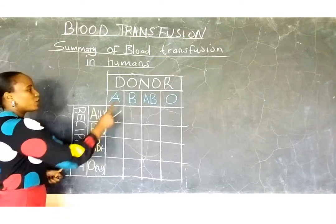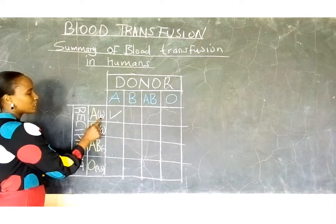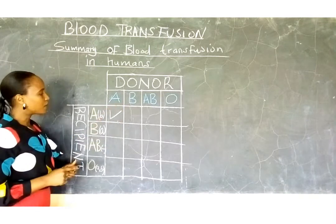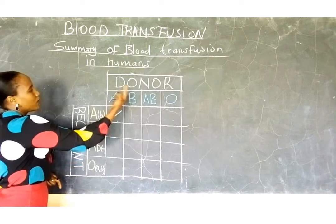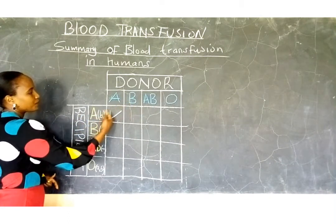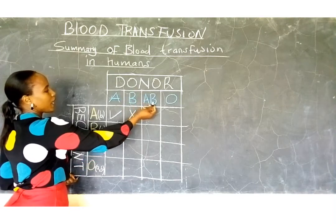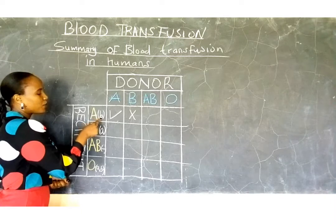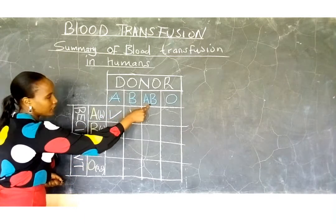What if the donor has blood group B and wants to donate to a recipient with blood group A? The antibody of the recipient is matching with the antigen of the donor, so there will be an antigen-antibody reaction causing agglutination — therefore these two groups are not compatible. Not acceptable. What if the donor has blood group AB donating to a recipient with blood group A? The antibody B in the recipient's plasma will agglutinate antigen B in the donor's blood — also not acceptable.